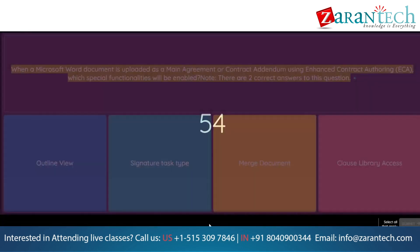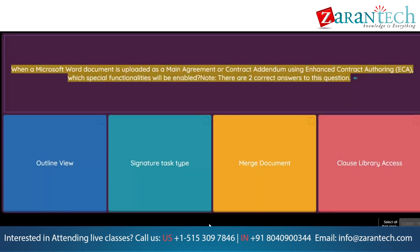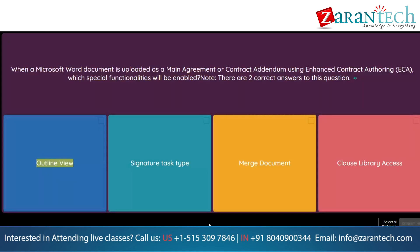Question: When a Microsoft Word document is uploaded as a main agreement or contract addendum using Enhanced Contract Authoring (ECA), which special functionalities will be enabled? Note: there are two correct answers. Option 1: Outline view. Option 2: Signature task type. Option 3: Merge document. Option 4: Clause library access.